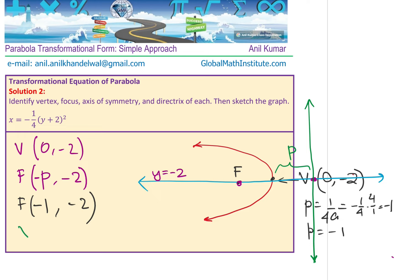The directrix will be a line perpendicular to the axis, the same distance away from the vertex as the focus. Since the focus is 1 unit to the left of the vertex at x = 0, the directrix is x = 1.